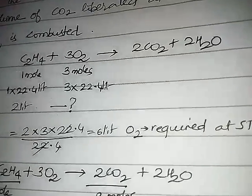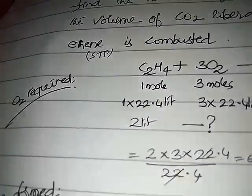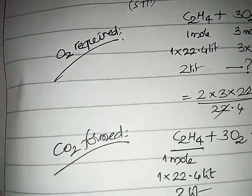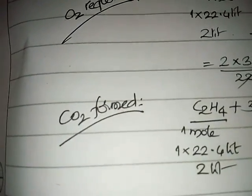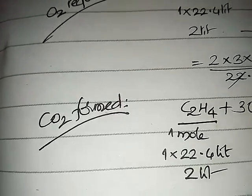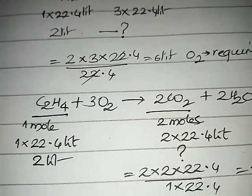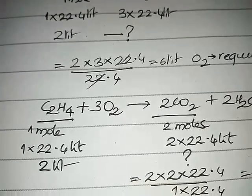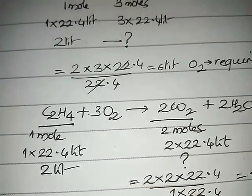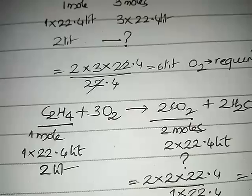Let's have a look at carbon dioxide now. Again the same equation, balanced equation. The relation between C2H4 and CO2: one mole C2H4, two moles of CO2. C2H4 is again given, one mole means 22.4 liters.